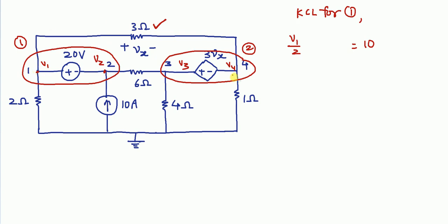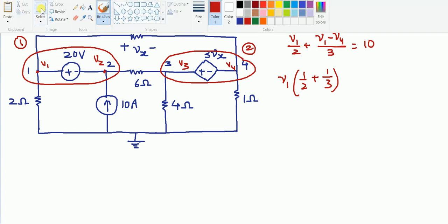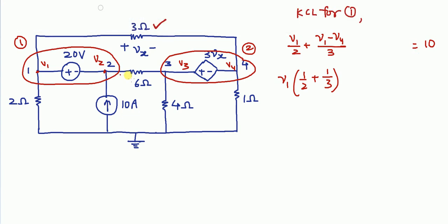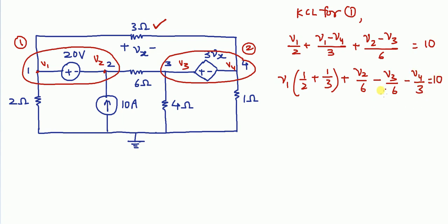Since there is nothing common between the two super nodes, we need to write the current flowing through the 3 ohm resistance, which is (V1 − V4)/3. The first KCL equation becomes: V1·(1/2 + 1/3) + V2/6 − V3/6 − V4/3 = 10, with node voltages V1, V2, V3, and V4.